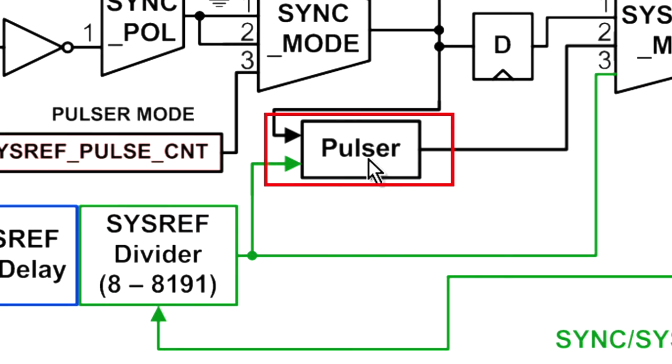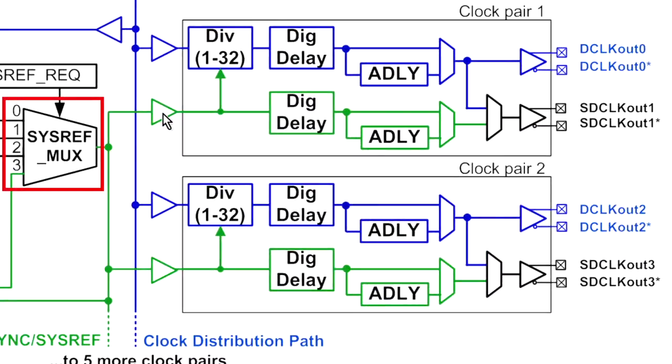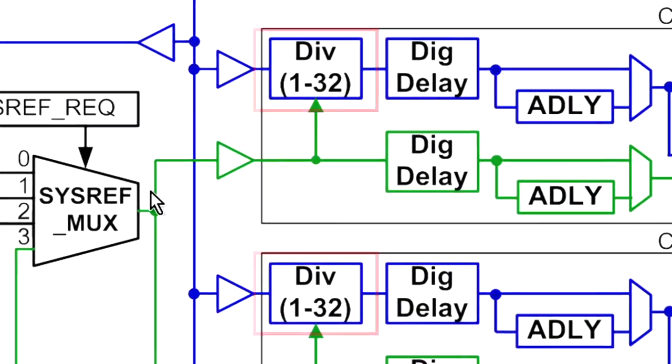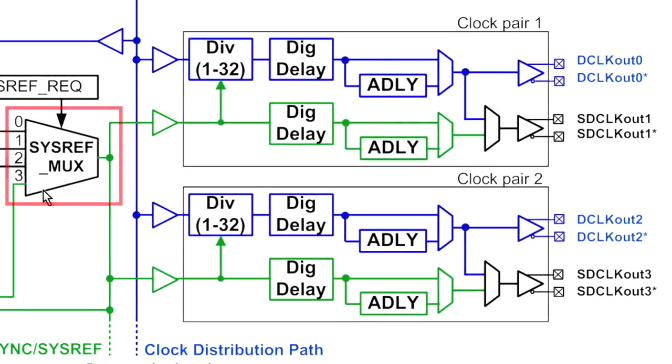This sysref divider goes into a pulsar function or straight out to the sysref mux to provide the clock to the sysref path. This has a dual purpose. The first purpose is to synchronize these dividers to provide deterministic digital delay between all of the dividers. That's important for JESD204B. The second purpose is to distribute the sysref signal itself to the logic devices to reset the internal counters.